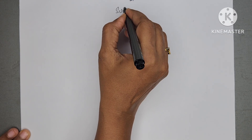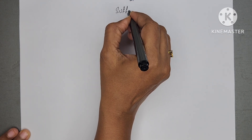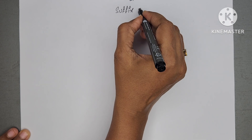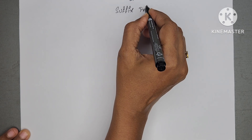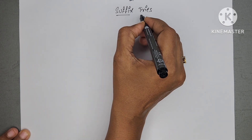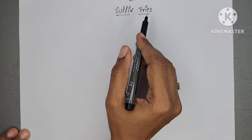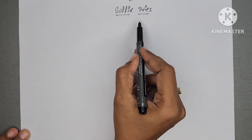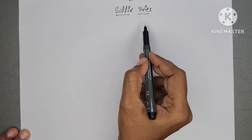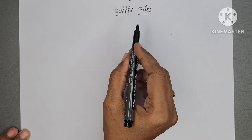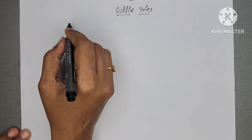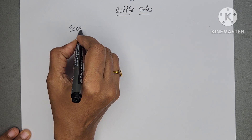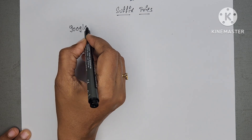Hello all. Today's topic is suffix trie. In previous videos, I have explained about standard trie and compressed trie. The next one is suffix trie. What is suffix trie? We have to construct a compressed trie for all suffixes of a given string. That is called suffix trie.